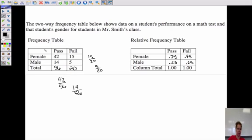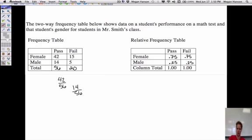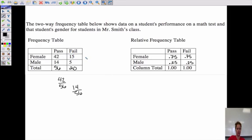And you could do this a different way, too. We could say, now, what's the total number of people that failed, or the total number of females? So the total number of females would be 57, and the total number of males would be 19.